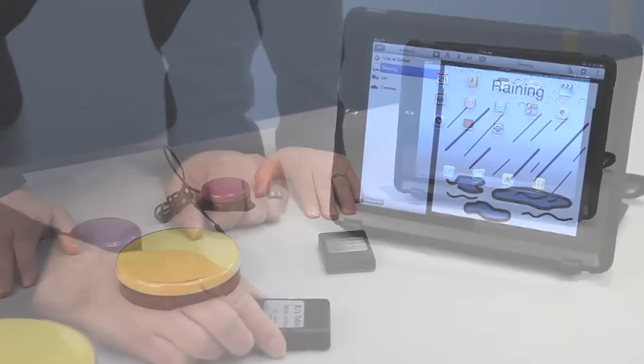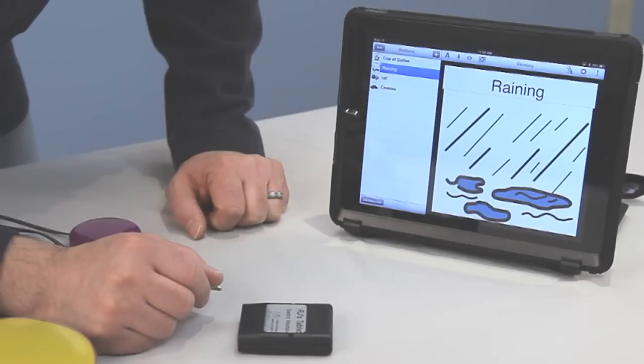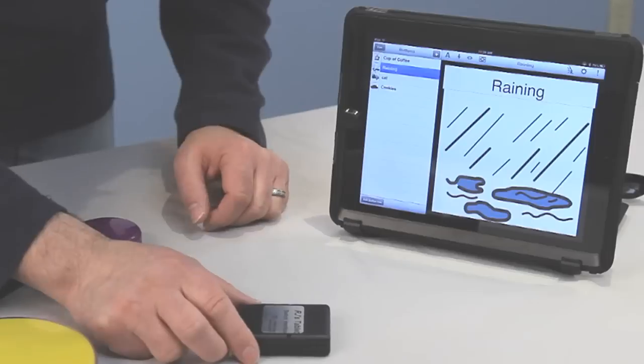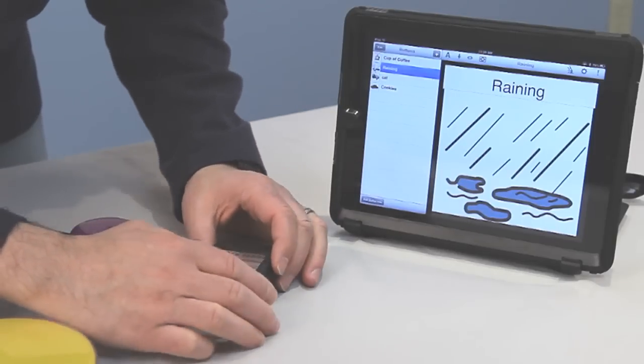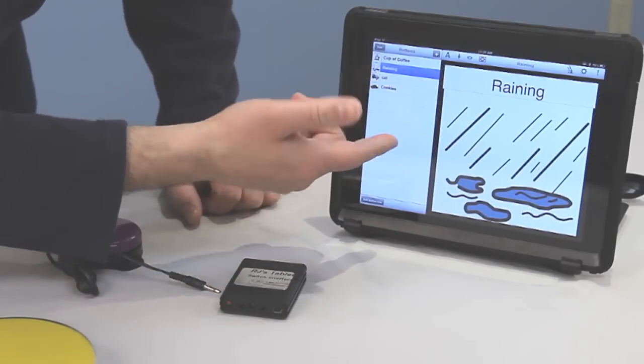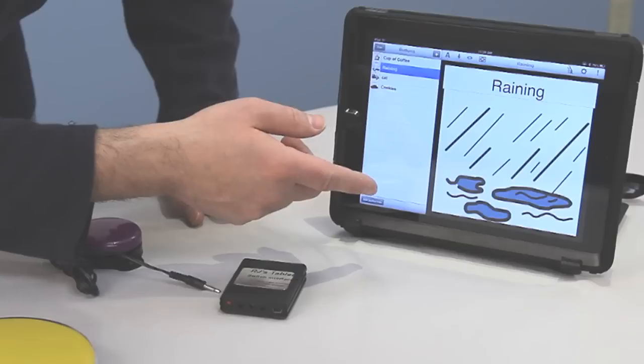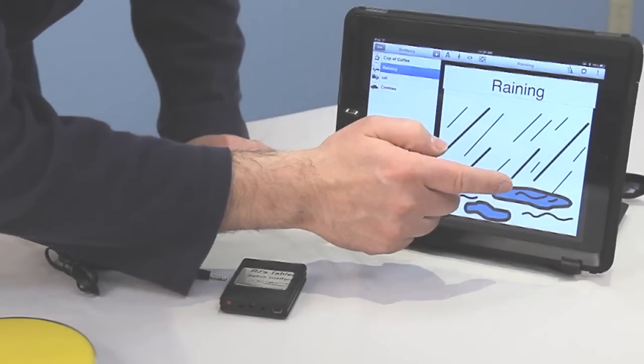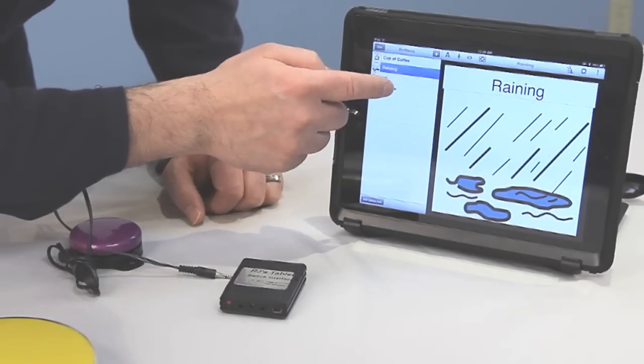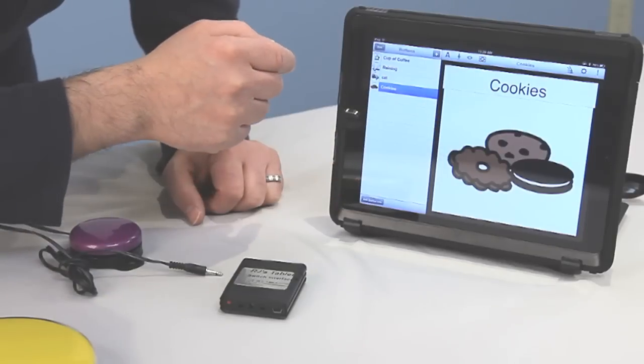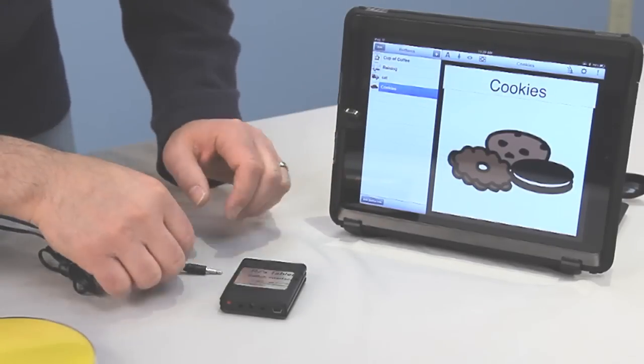Now that we have our switch-friendly app open, I'm just going to show you how easy this is to use. You can program your own messages for these icons, and if you tap on the iPad, it's raining outside, I would like some chocolate chip cookies, please.